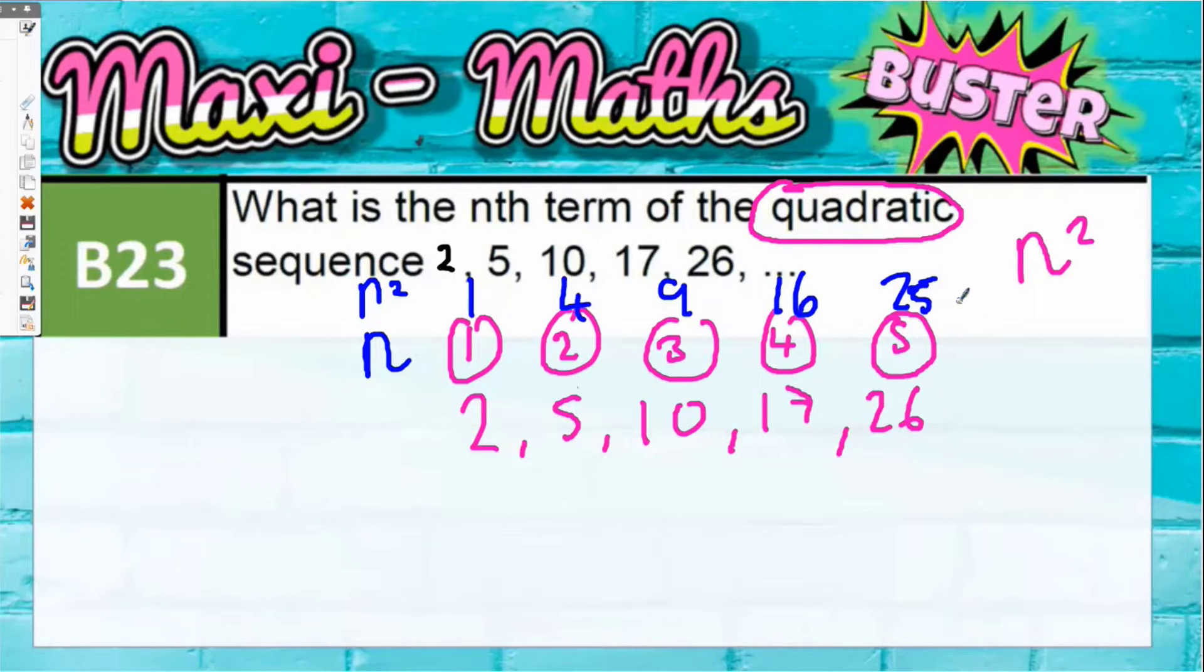Now we should be thinking, what do we do to these numbers to get the actual numbers in the sequence? To get from 1 to 2 is plus 1, from 4 to 5 is plus 1, from 9 to 10 is plus 1, from 16 to 17 is plus 1, from 25 to 26 is plus 1. So we've basically stumbled across the rule.